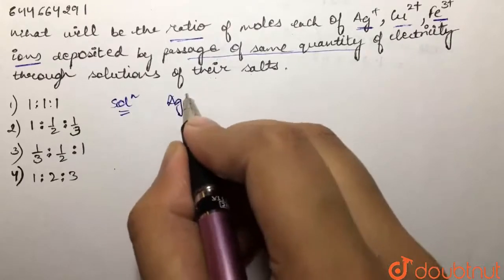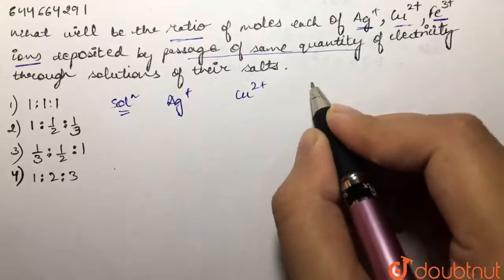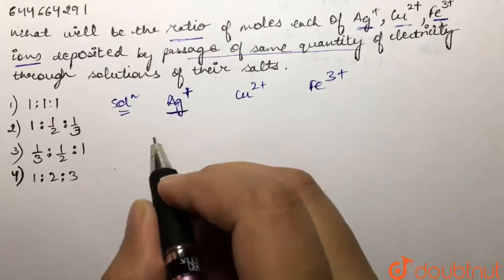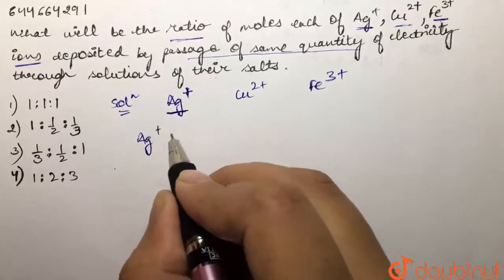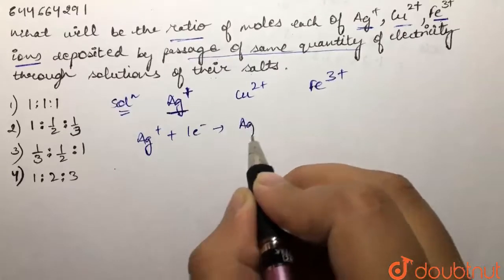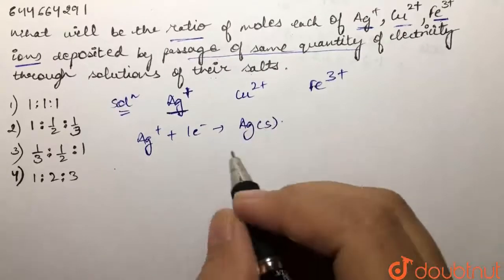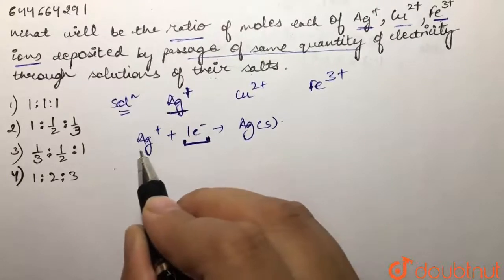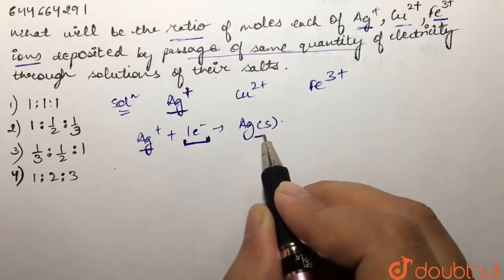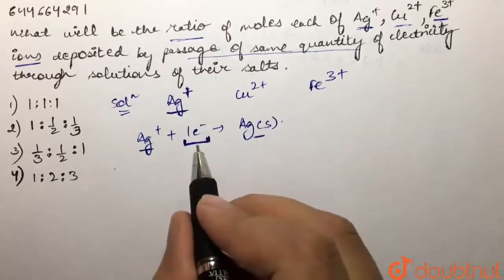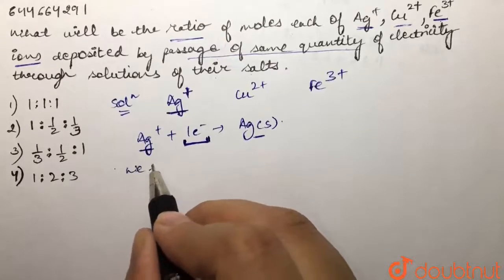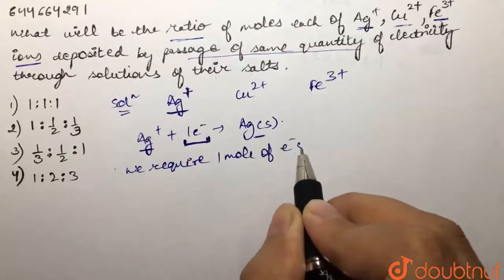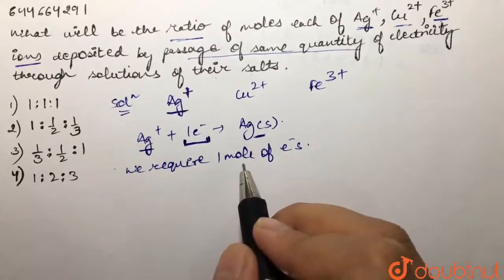We are given silver positive ion, copper 2 positive ion, and iron 3 positive ion. If we talk about the silver ion, silver positive would gain one electron and form solid silver. So one mole of electrons would help Ag⁺ ions form solid silver. We require one mole of electrons to form one mole of solid silver.